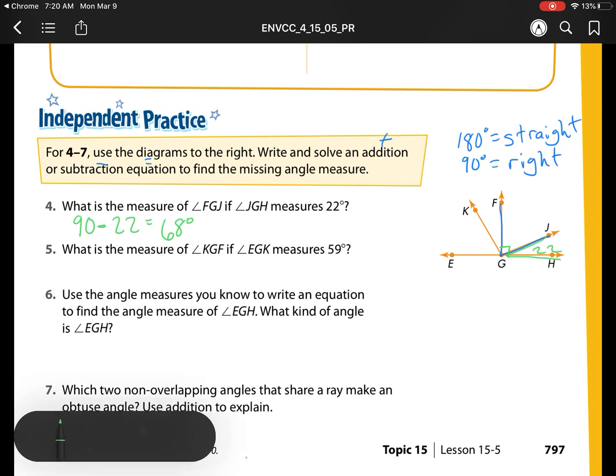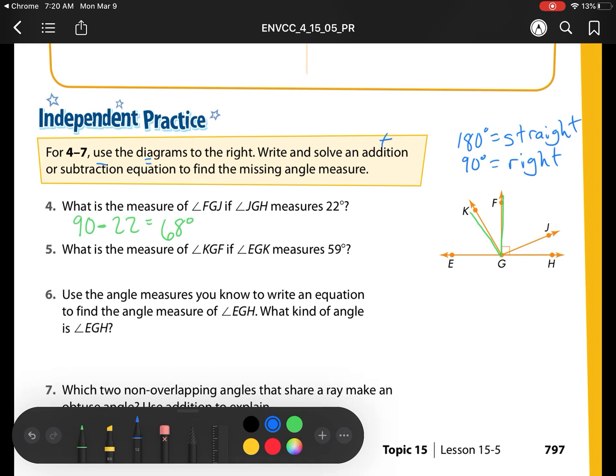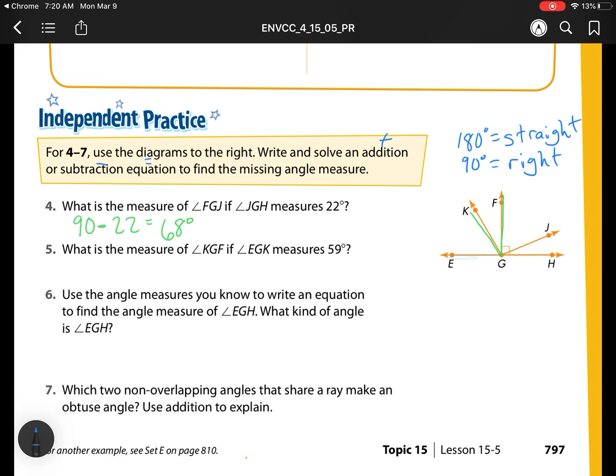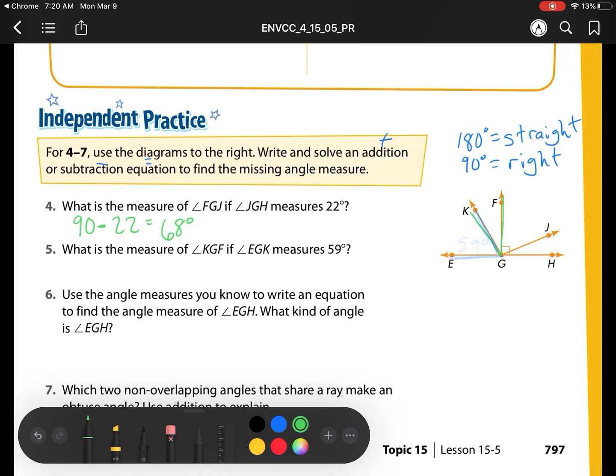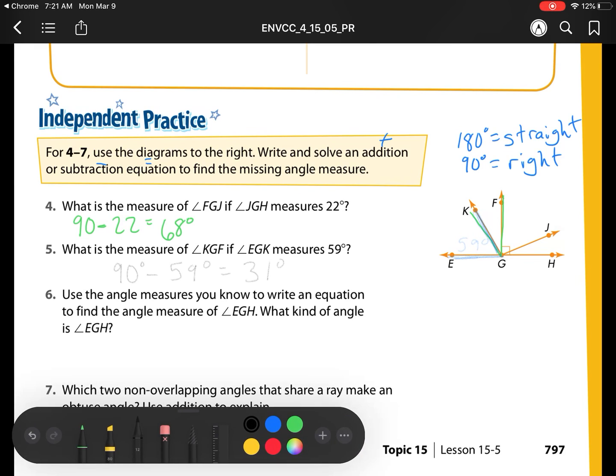What is the measure of angle KGF? So let's erase what we have here. What is the measure of angle KGF if EGK, so this angle right here is equal to 59 degrees. Well, what do I have again? What I have is 90 degrees. And what am I doing with that? I'm taking away 59 degrees. So let's check. Does that make sense? So what would I be left with? I'd be left with 31 degrees.